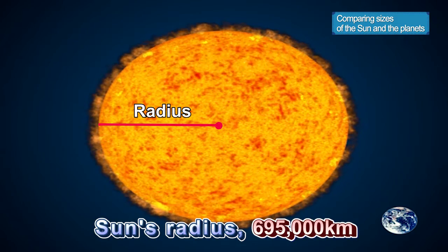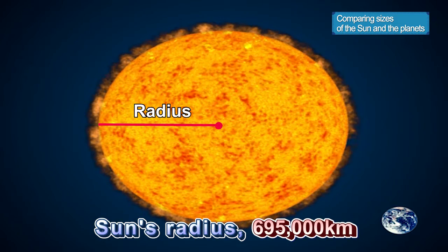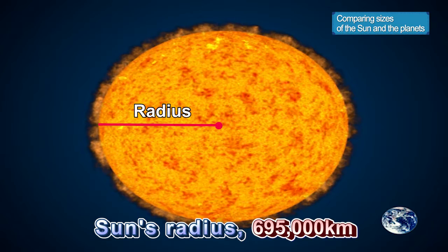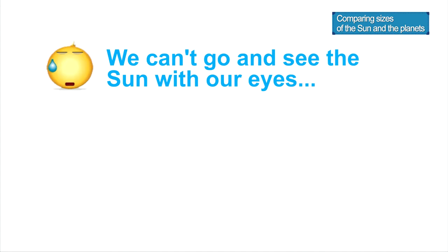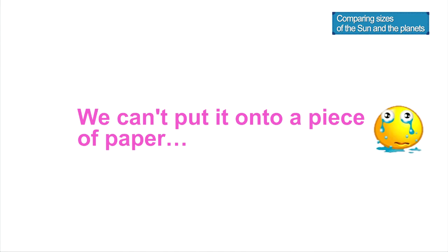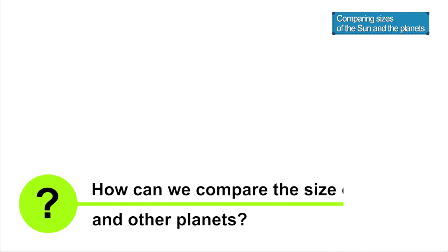The Sun's radius is a staggering 695,000 kilometers. We can't go and see the Sun with our eyes and we definitely can't put it onto a piece of paper. So how can we compare?